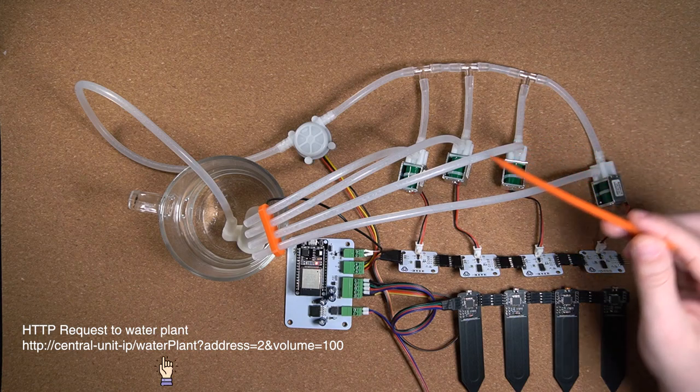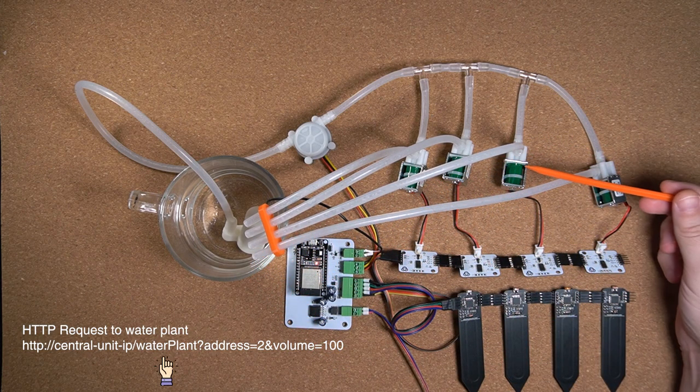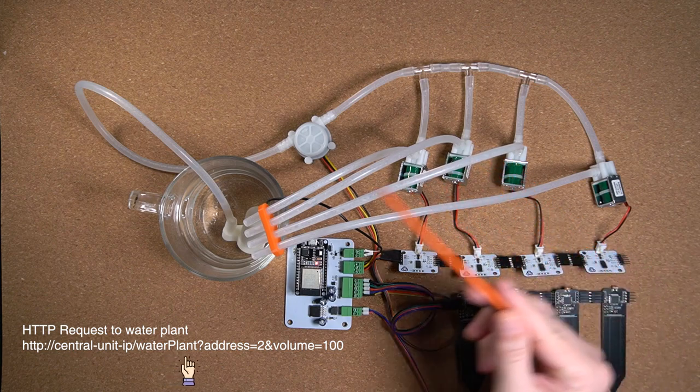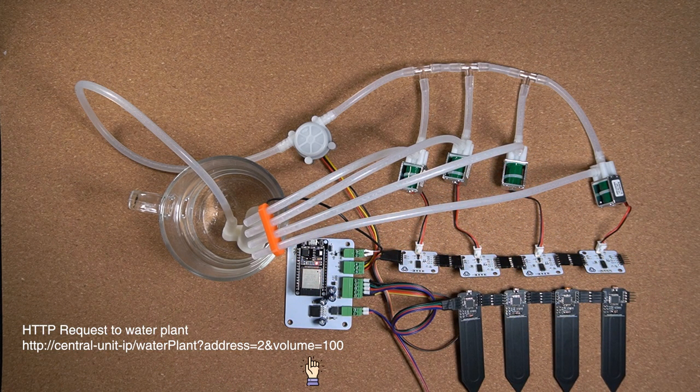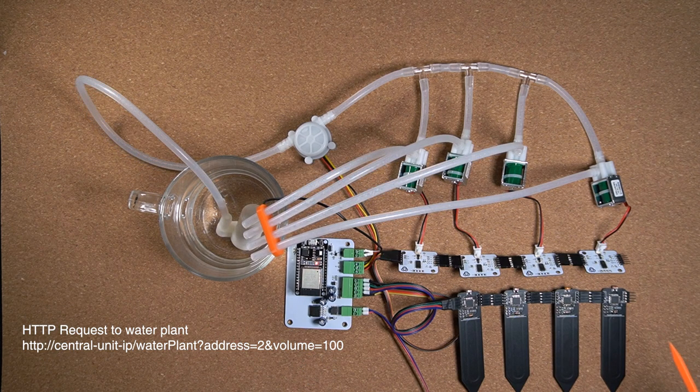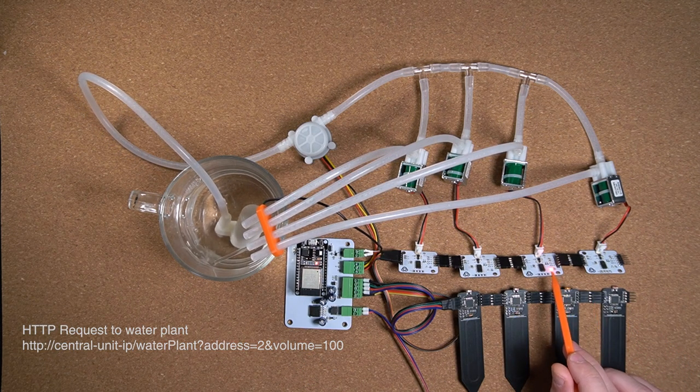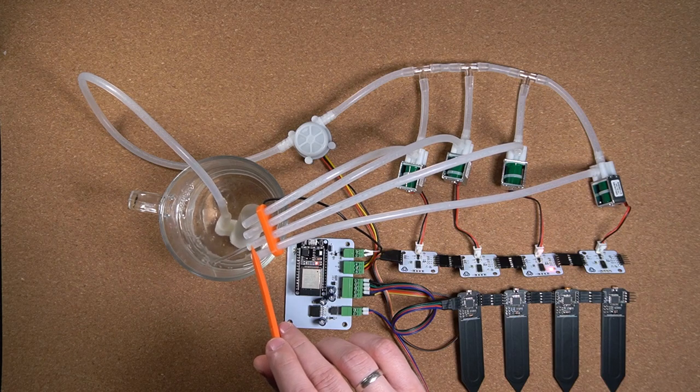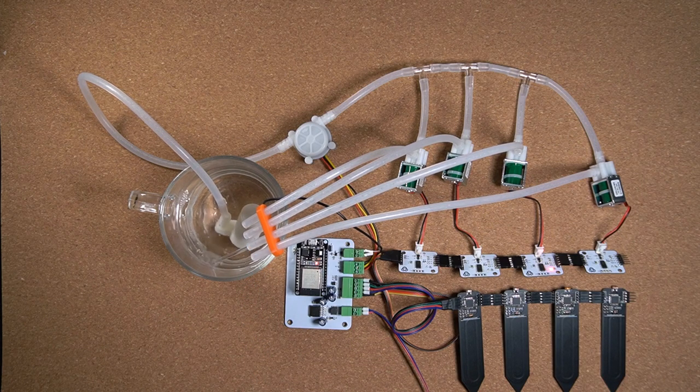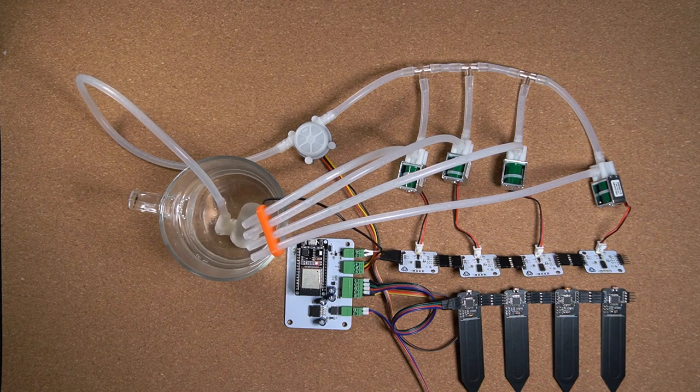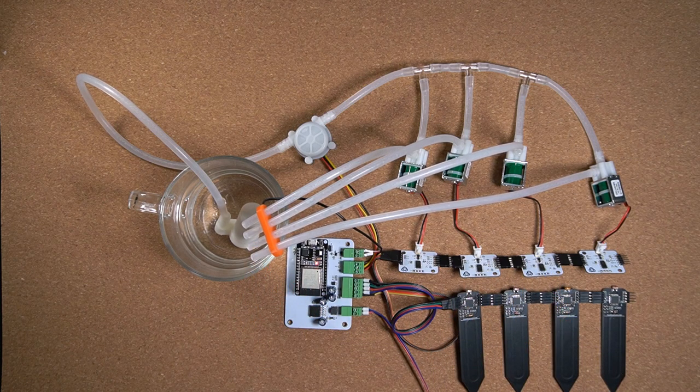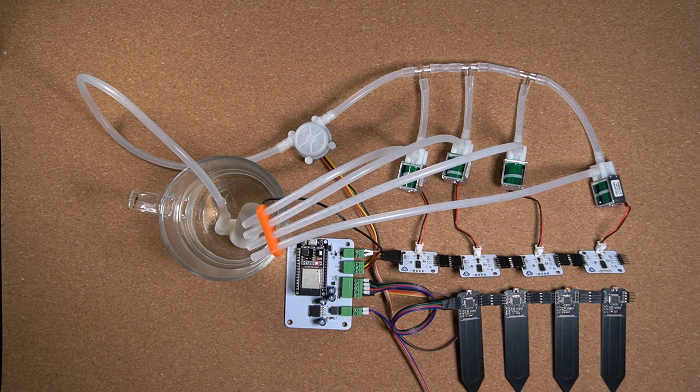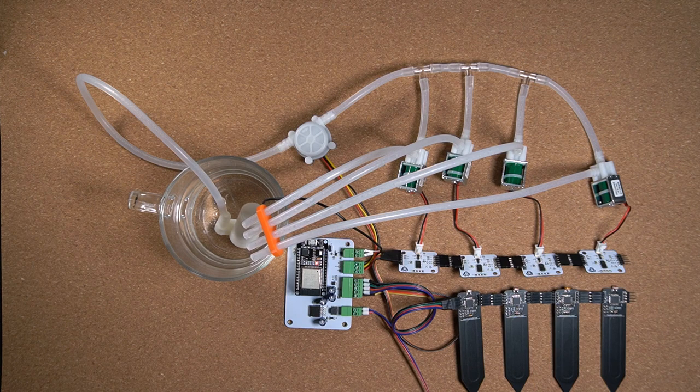First we will send water plant command to central unit. This command has two parameters: one is which solenoid to open and second how much water to dispense. Immediately we can see that the water pump has turned on and also red LED on our solenoid driver is on to indicate valve is open. Central unit will keep the valve open until requested amount of water has been dispensed. After that it will close the solenoid and turn off the water pump. And that's it, super simple.